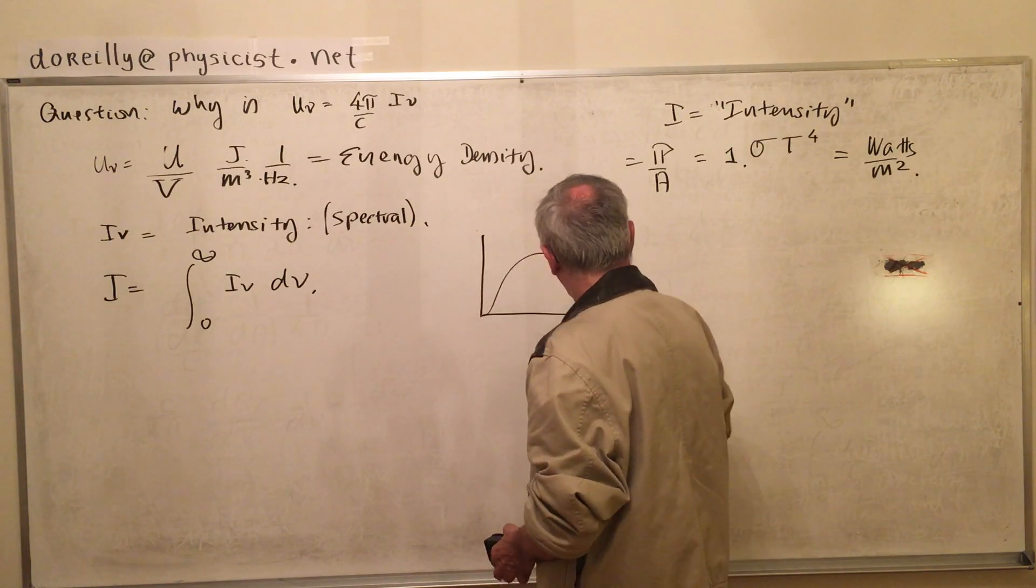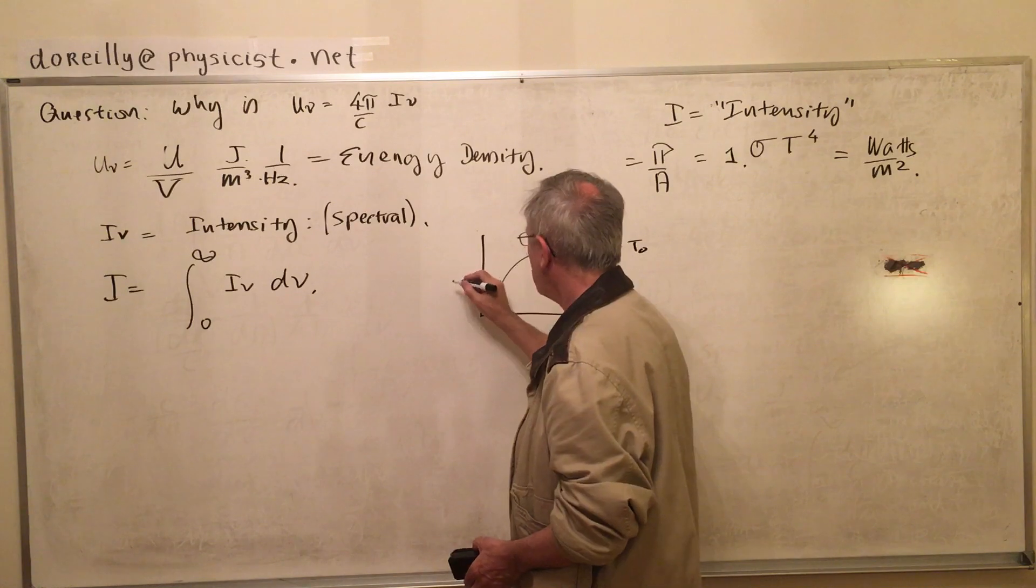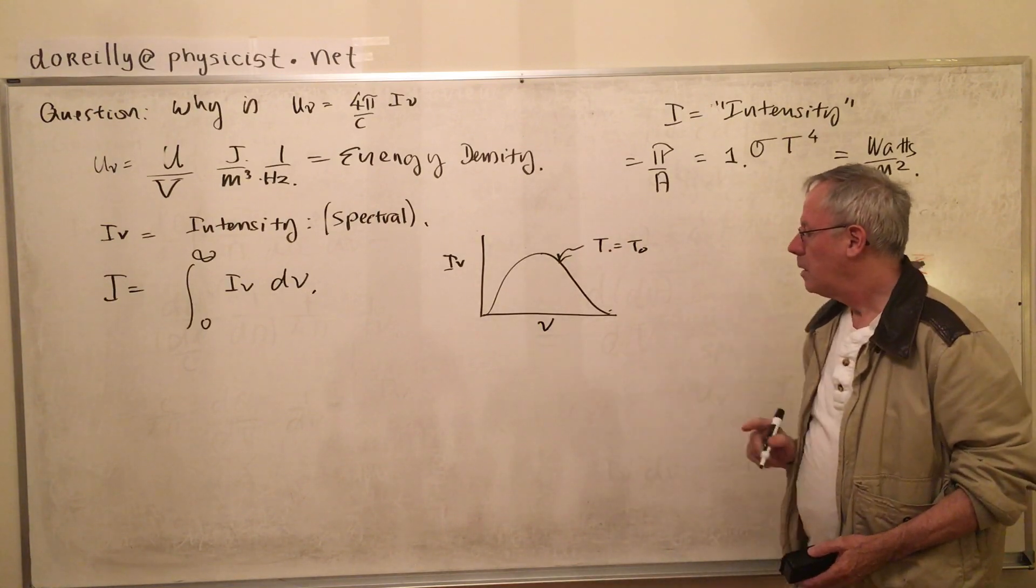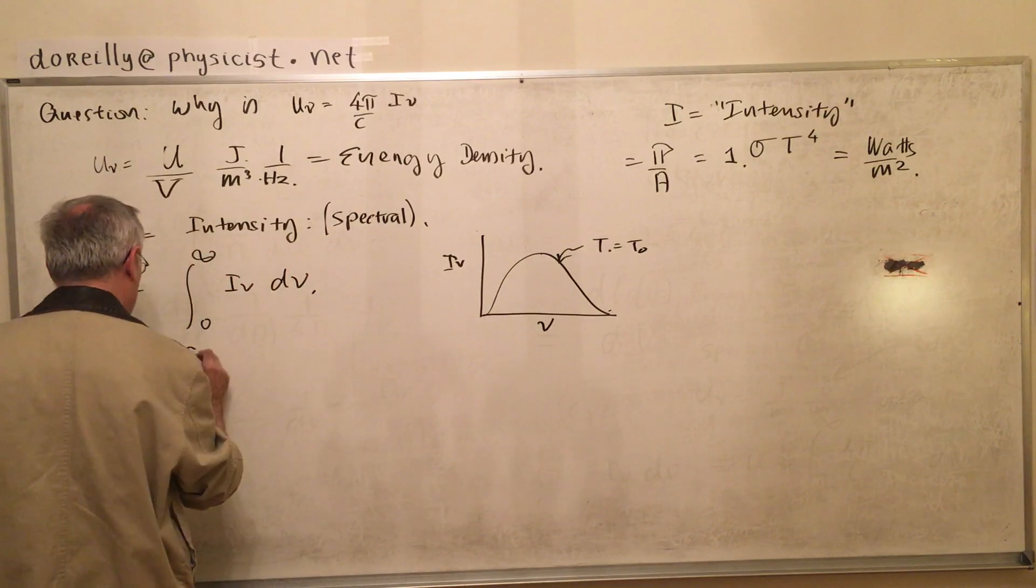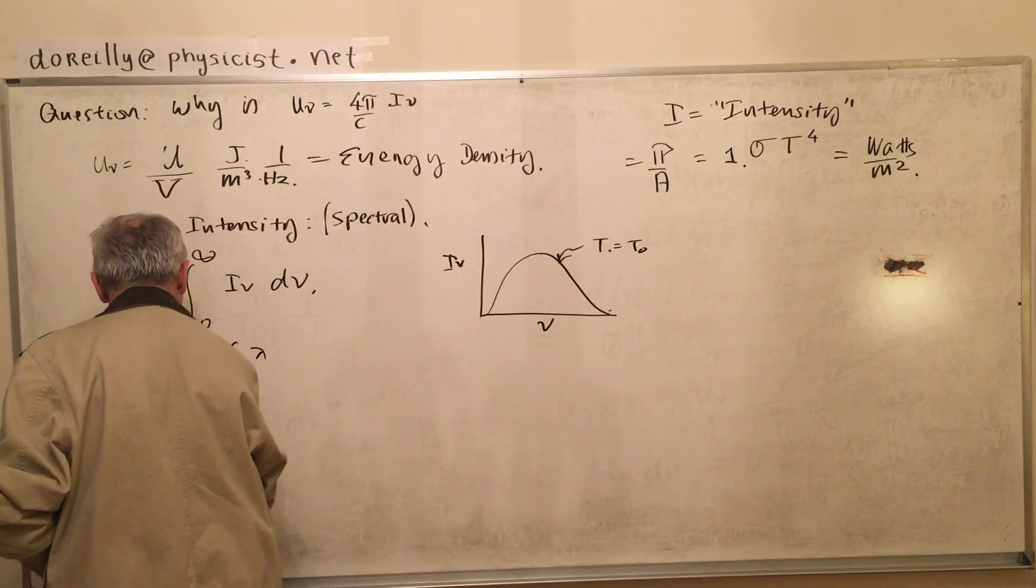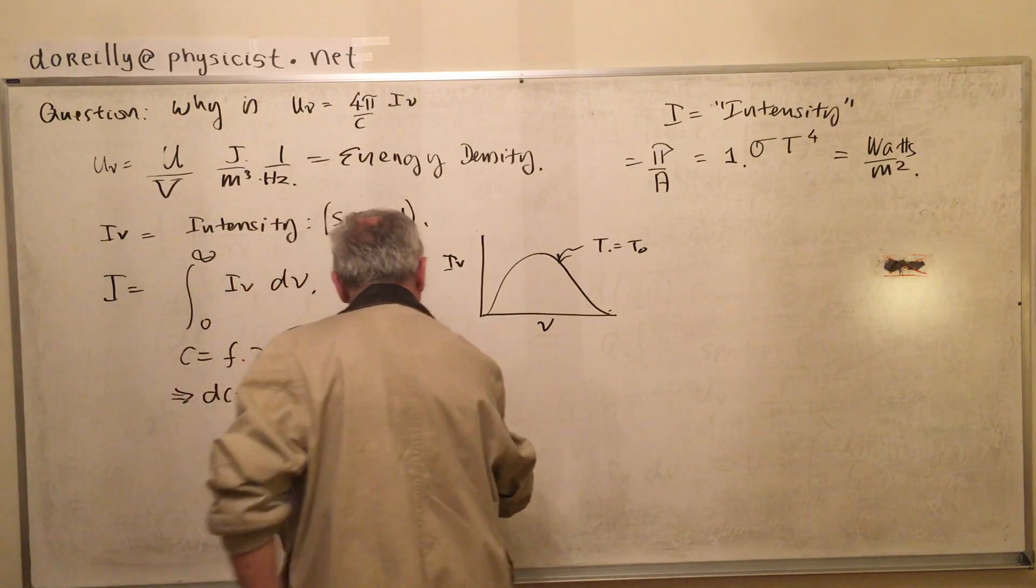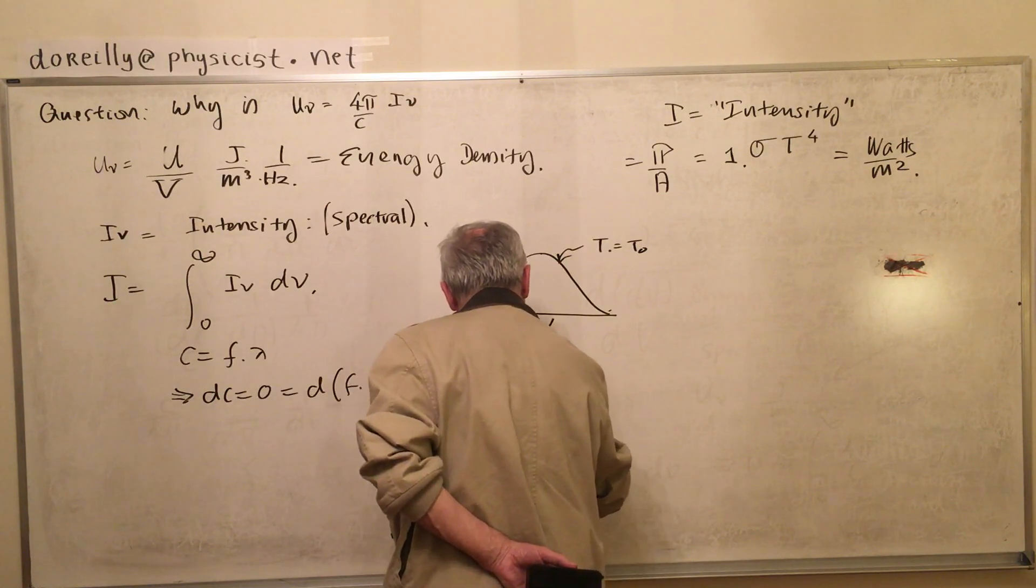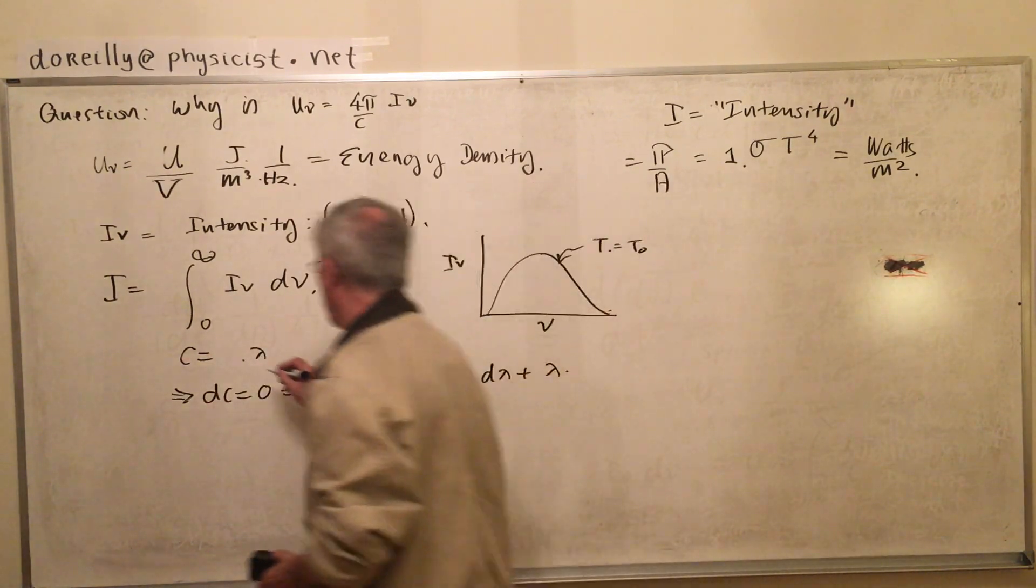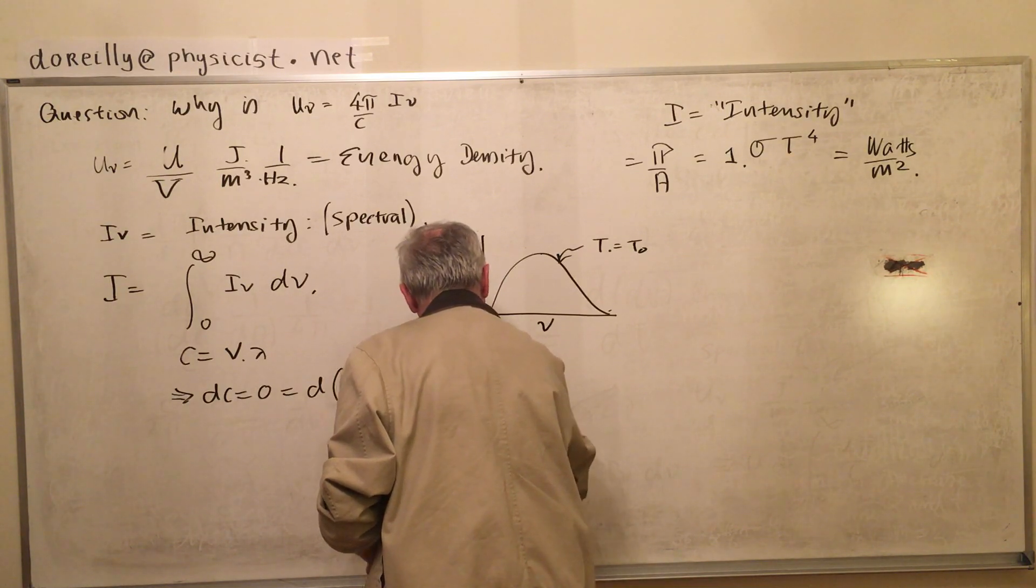Now, in the case of a black body, the graph kind of could look like this at a particular temperature. And of course, we could have nu replaced by lambda. C equals nu times lambda. I'm getting my notation mixed up. I should use nu for frequency.